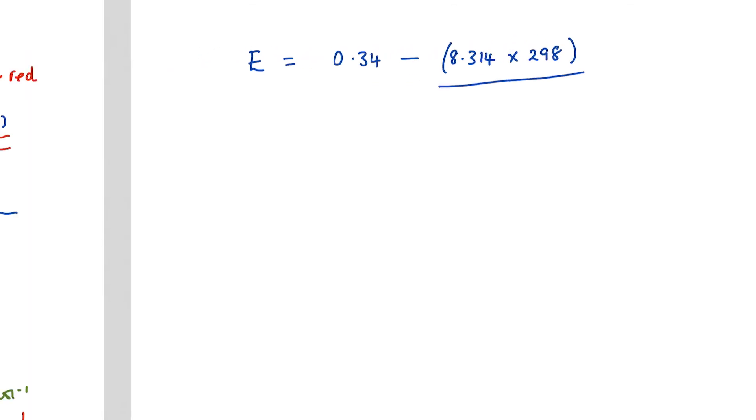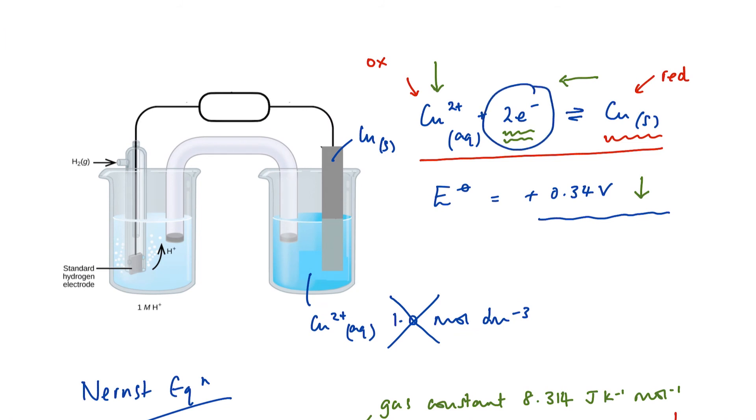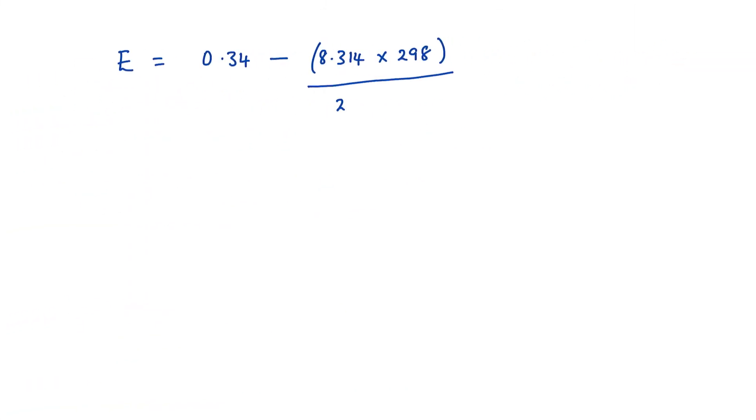How many moles of electrons are transferred? Well, if we go back to our equation, it's 2. So Z is 2. And we know that Faraday's constant is 96,500. And that is multiplied by LN. Concentration of copper is one, it's unity. And of our copper ions in solution. So that's our concentration of Cu2 plus. And that is copper. And when you plug that into your calculator, it comes out to be plus 0.33 volts.